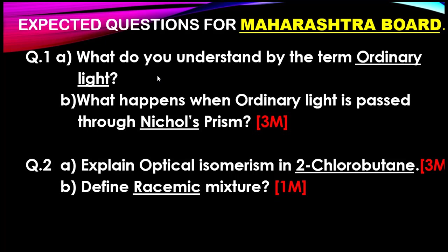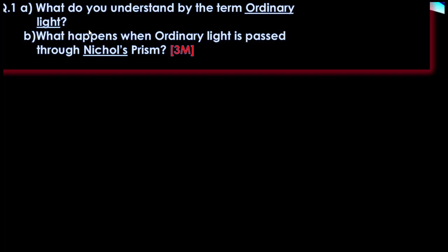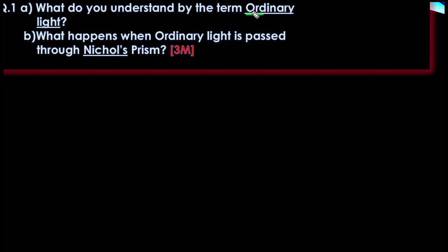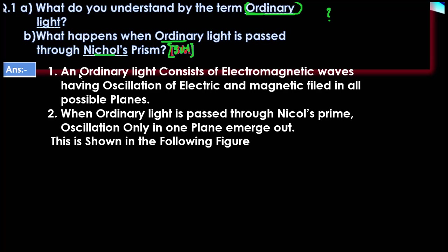The first question is: what do you understand by the term ordinary light? What happens when ordinary light is passed through a Nicol's prism? This is a 3-mark question. We have to write the answer in points. First point: ordinary light consists of electromagnetic waves having oscillation of electric and magnetic field in all possible planes.